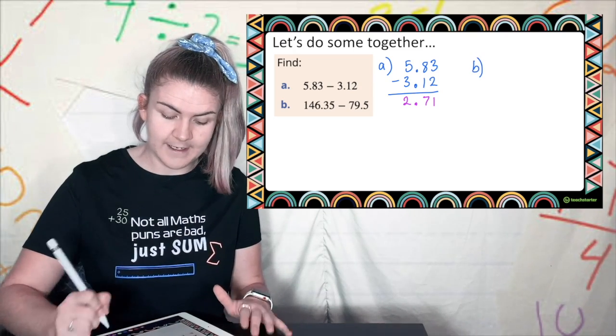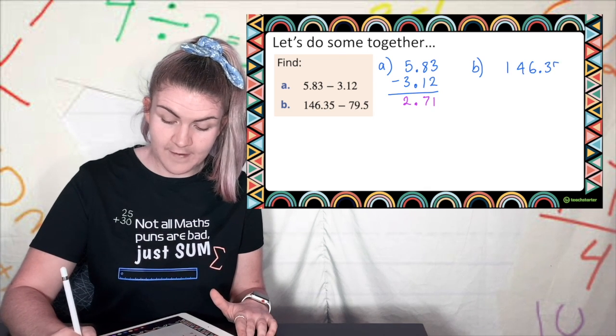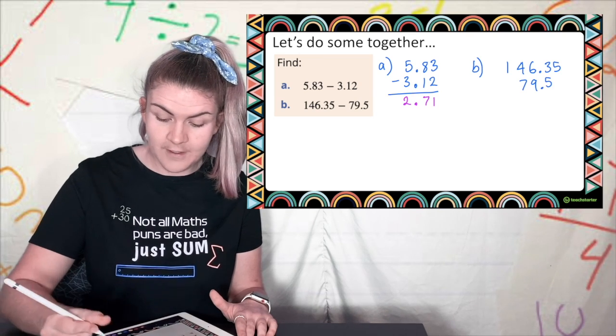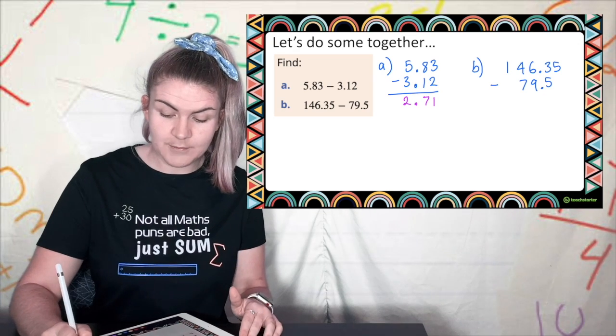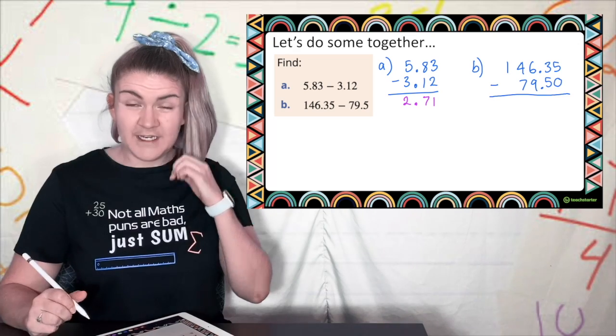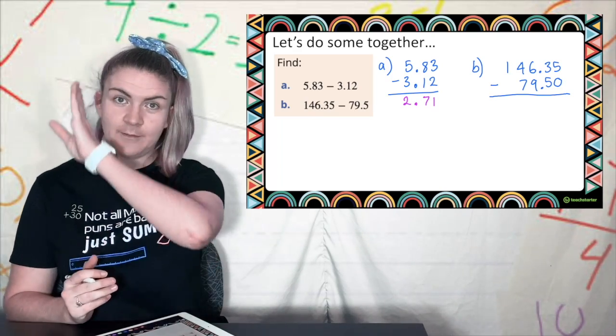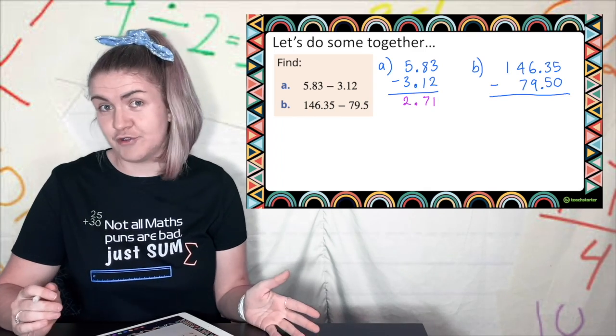B. I'm going to write it out again. I've got 146.35 and I'm taking away 79.5. Put in my operation. Now I've got an empty spot behind the decimal so I'm going to fill that in with a zero. It is really important to fill that in because otherwise we can sometimes get confused with the lines that we're following. So it is a really important step. Now that it's full I can subtract like normal.